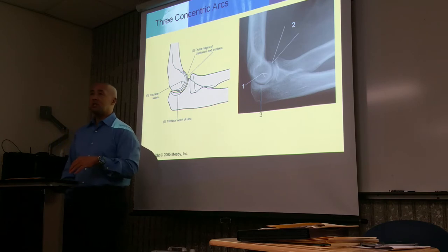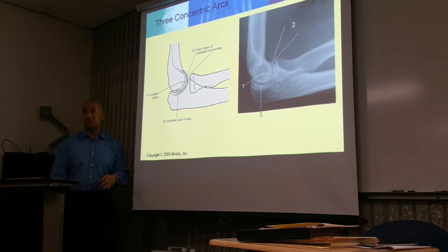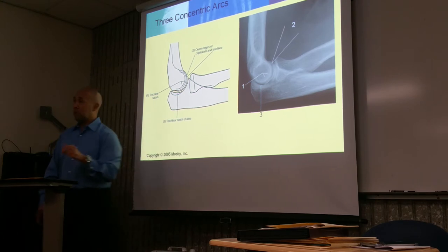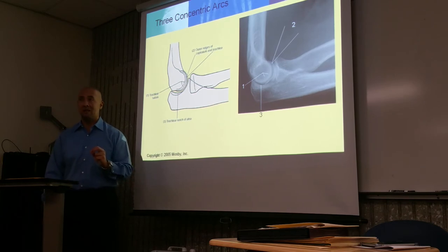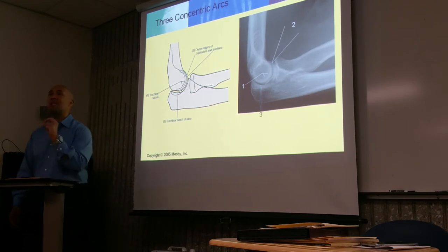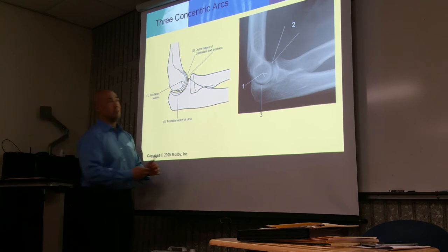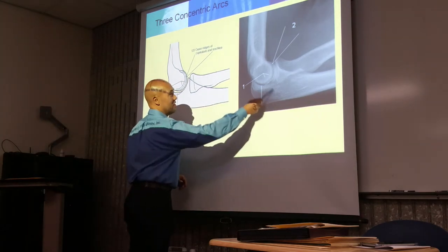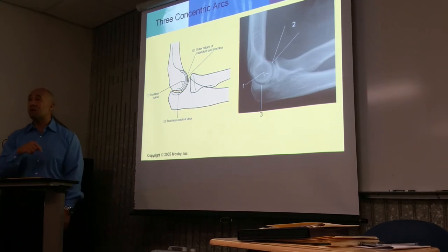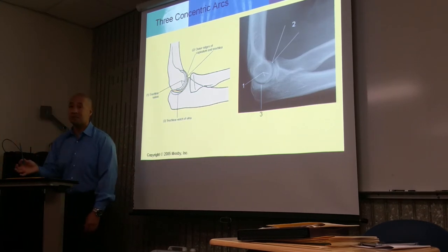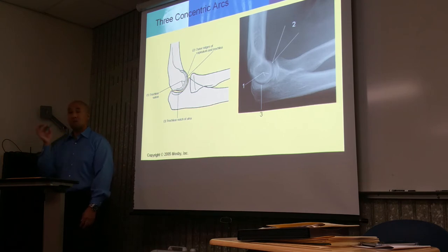If asked which position demonstrates the concentric arches, the answer is the true lateral elbow. If asked which position best demonstrates the olecranon process, it's also the lateral. So the lateral elbow demonstrates your concentric arches as well as your olecranon process in true profile.